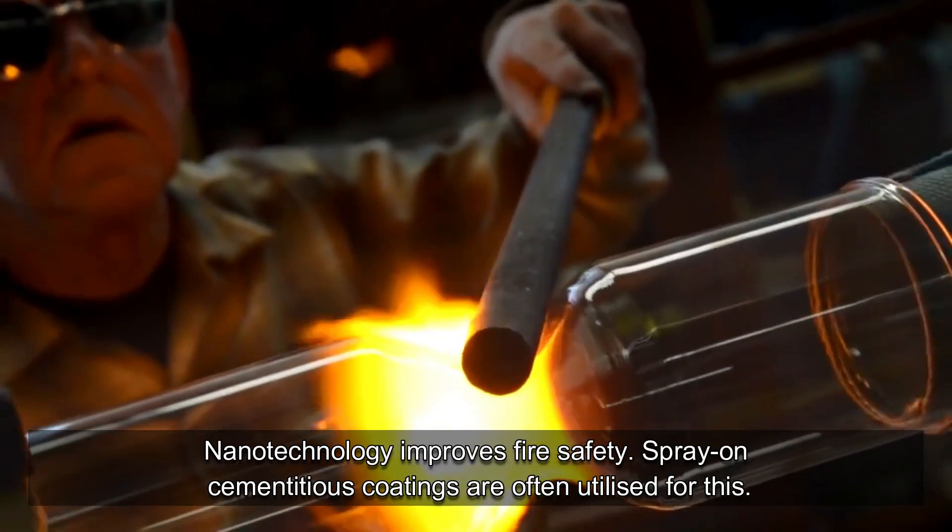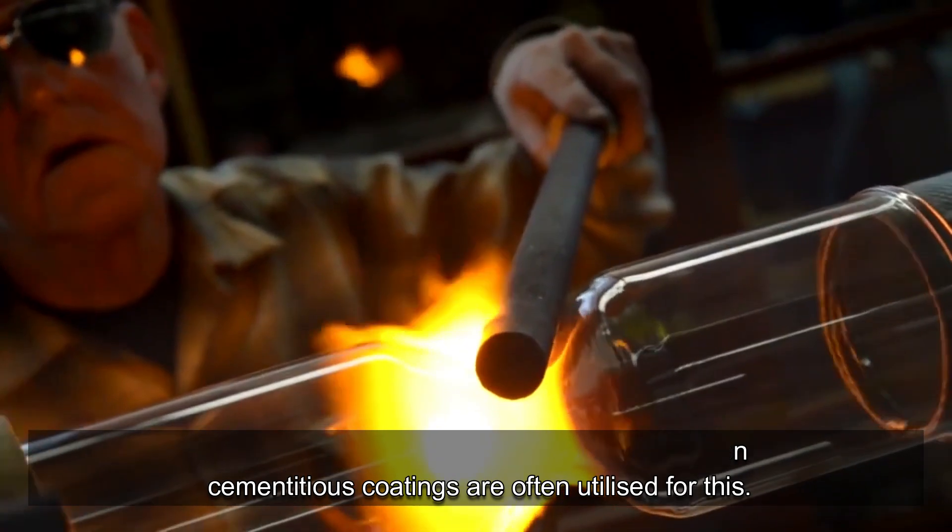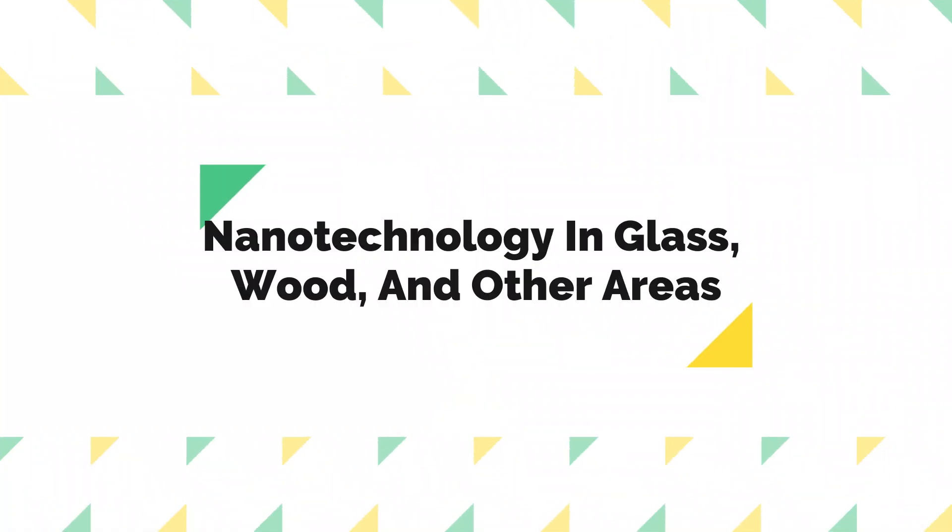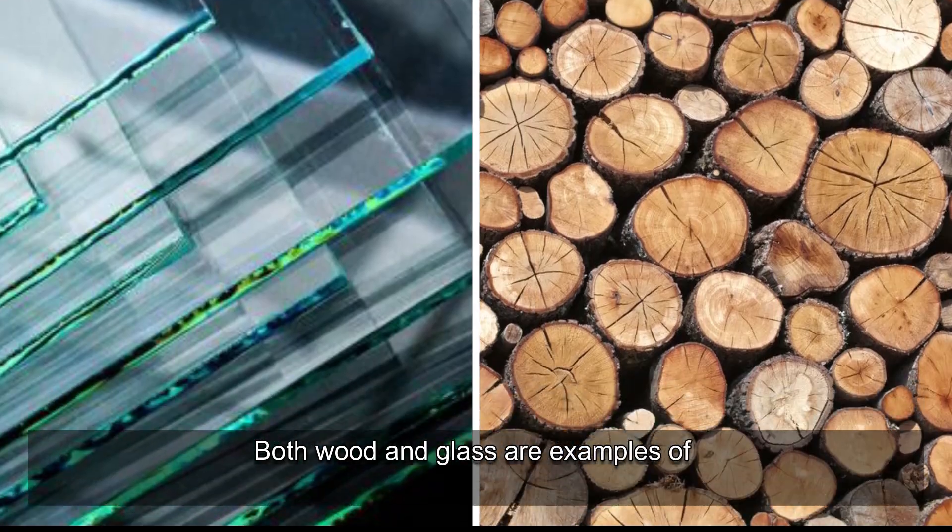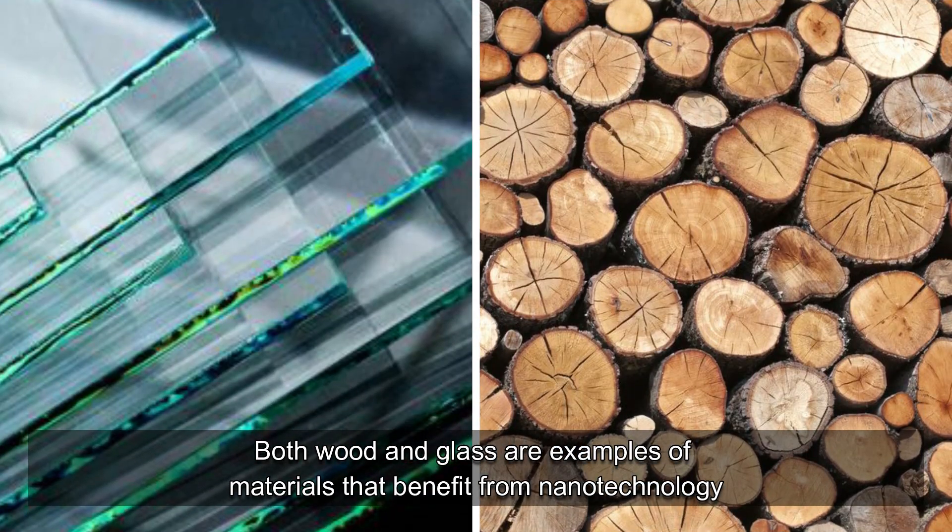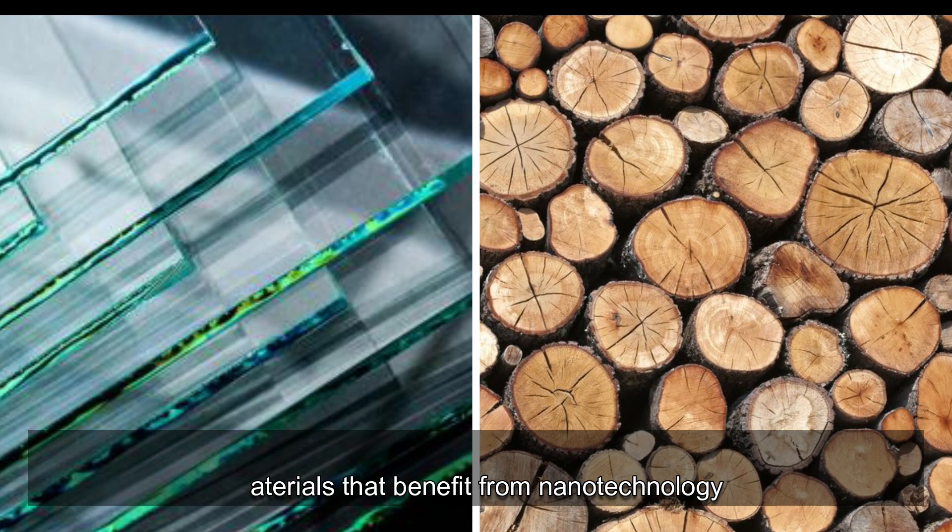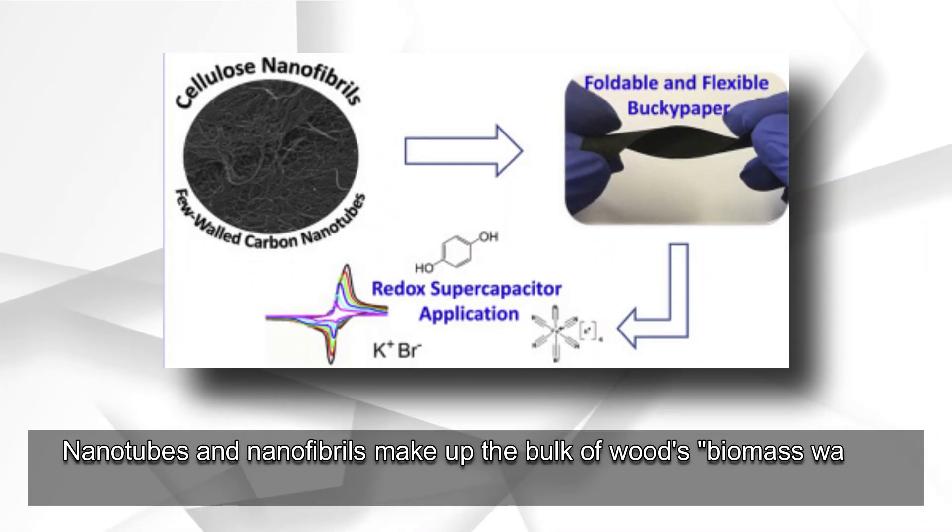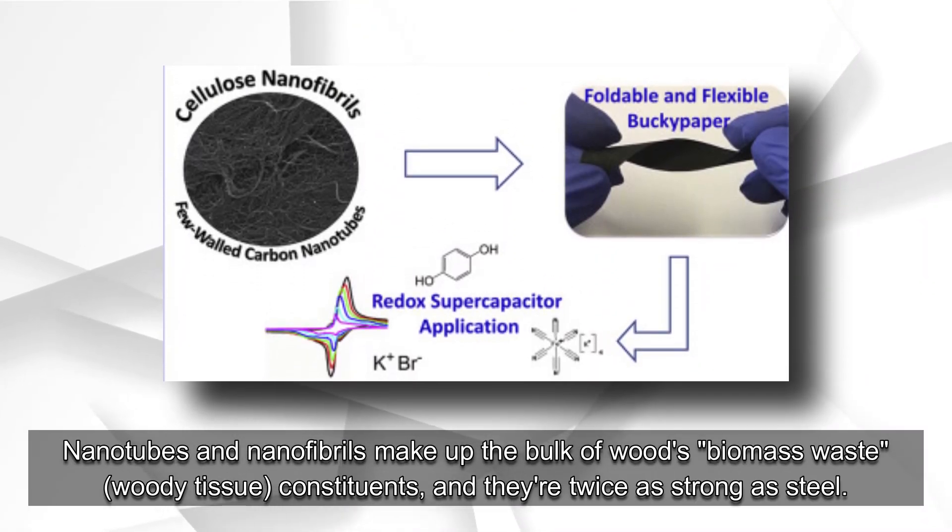Spray-on cementitious coatings are often utilized for this. Nanotechnology and glass, wood, and other areas. Both wood and glass are examples of materials that benefit from nanotechnology. Nanotubes and nanofibrils make up the bulk of wood's biomass waste.